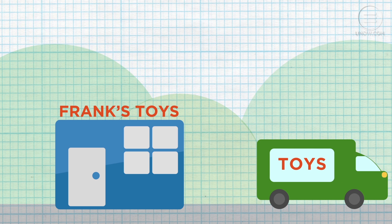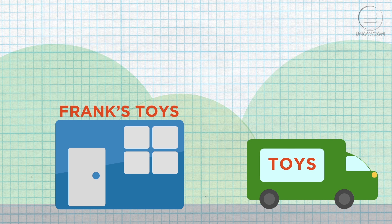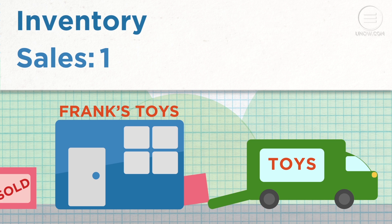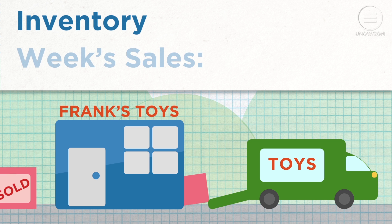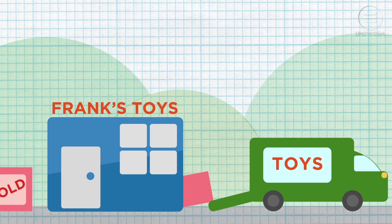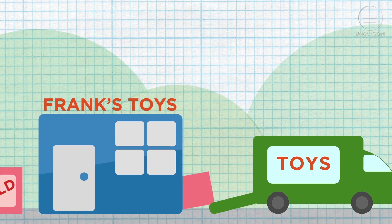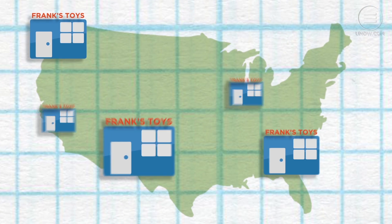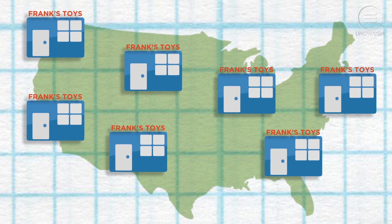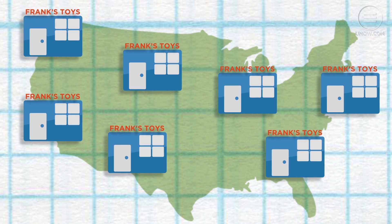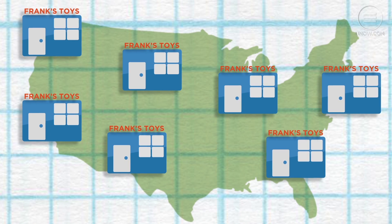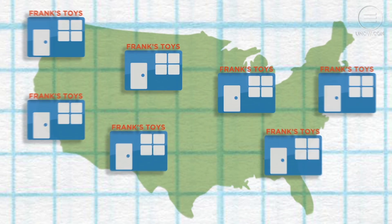If you owned a small toy store, how often would you track your inventory? Would you update your journal every time you made a sale, even if you made several sales per day? Or would you wait and count your sales at the end of the week? One method would likely be more efficient for you than the other. Now imagine that your toy store expanded into a large national chain — would that affect how you update your inventory?